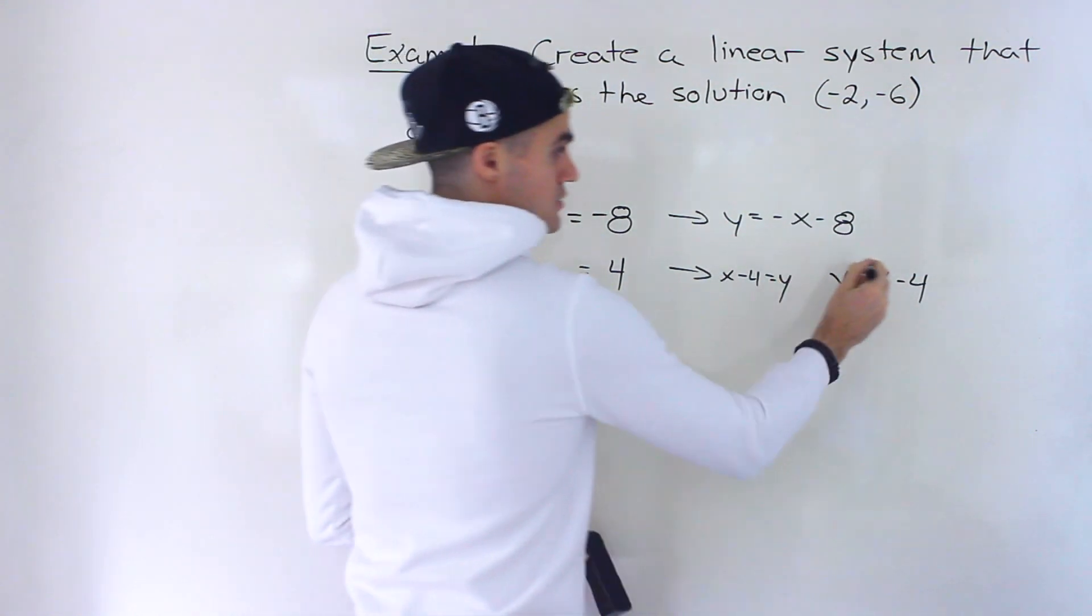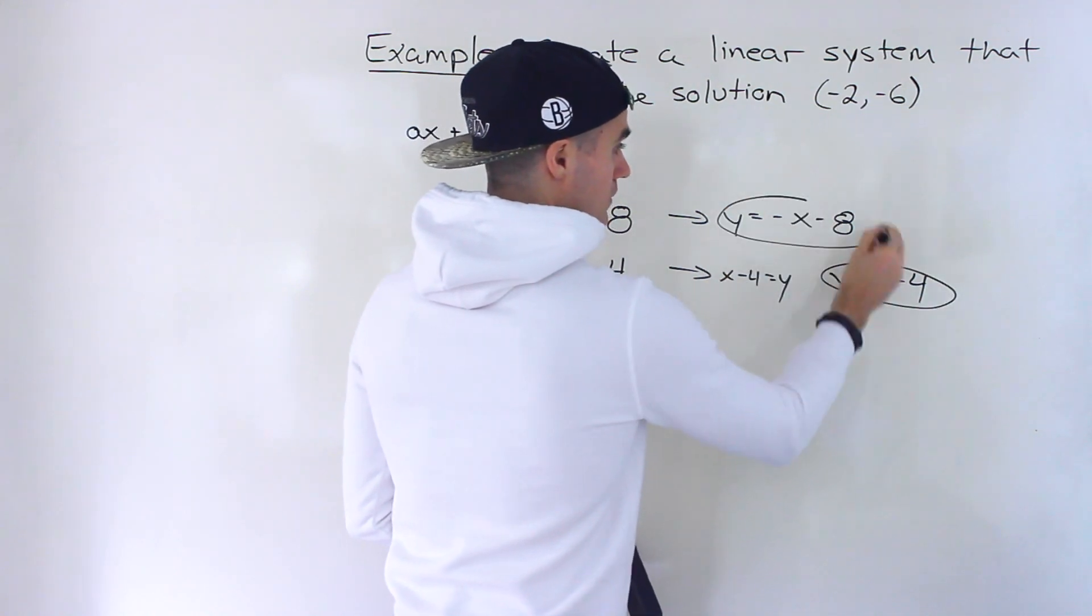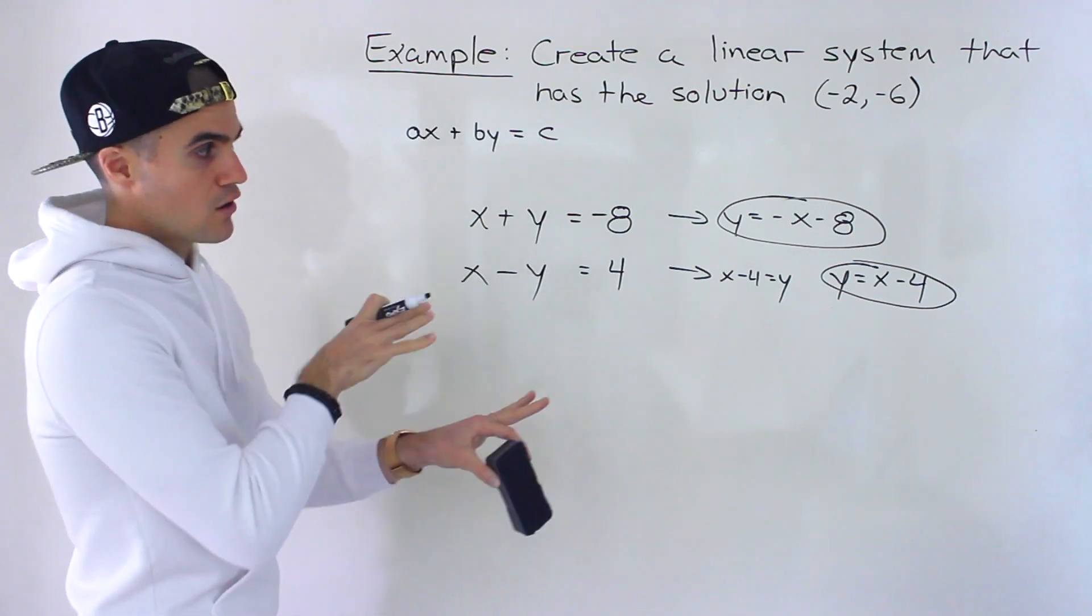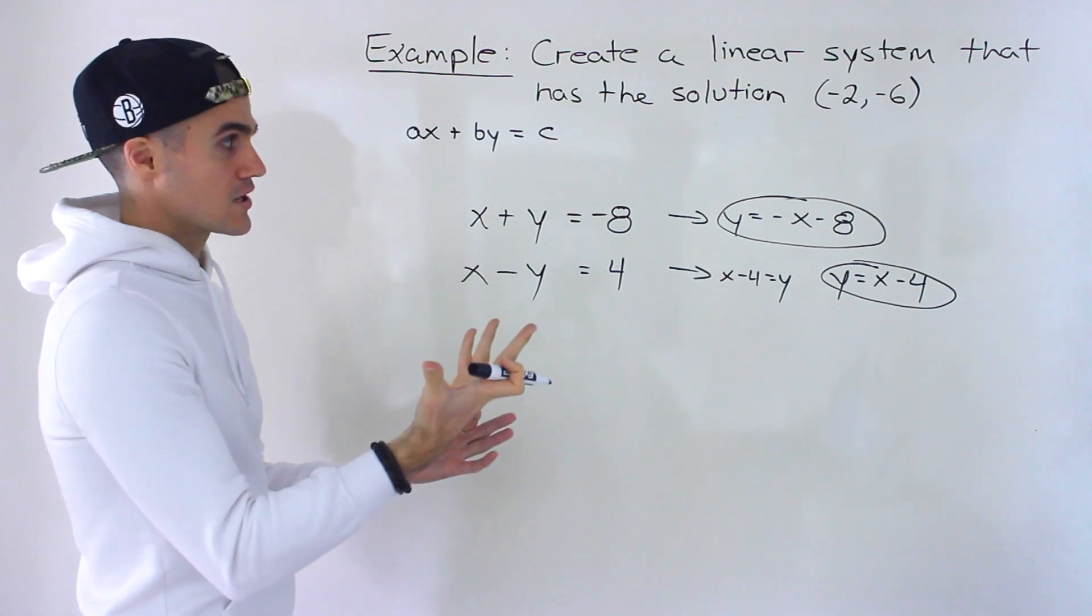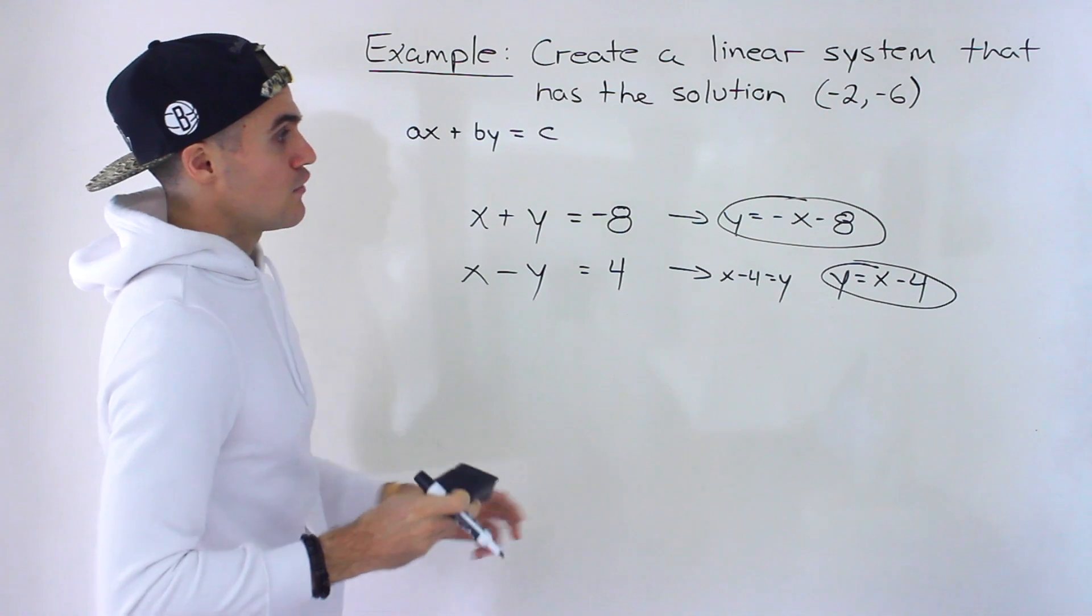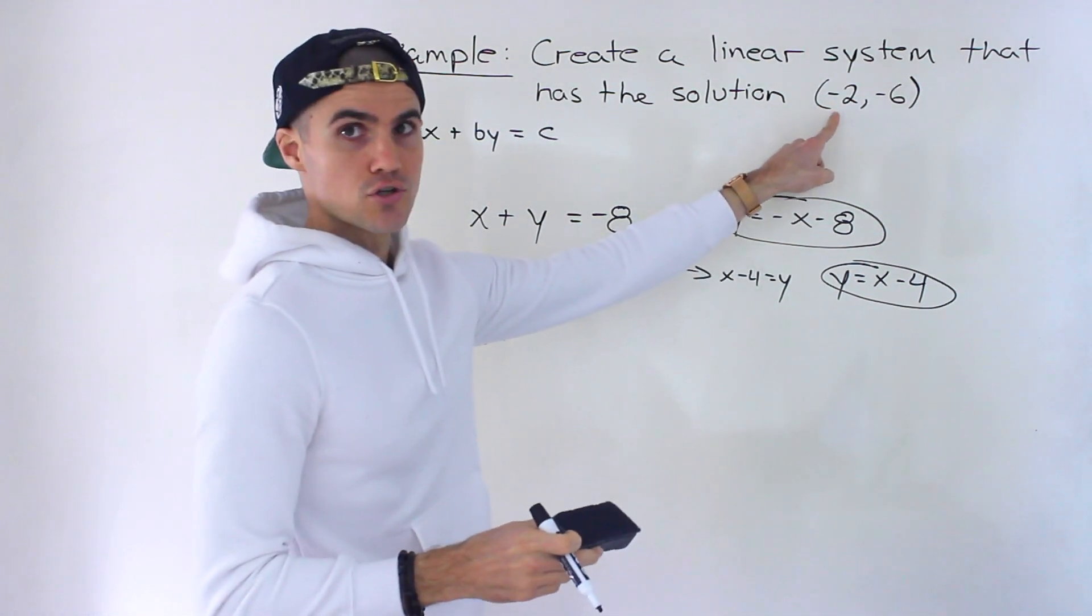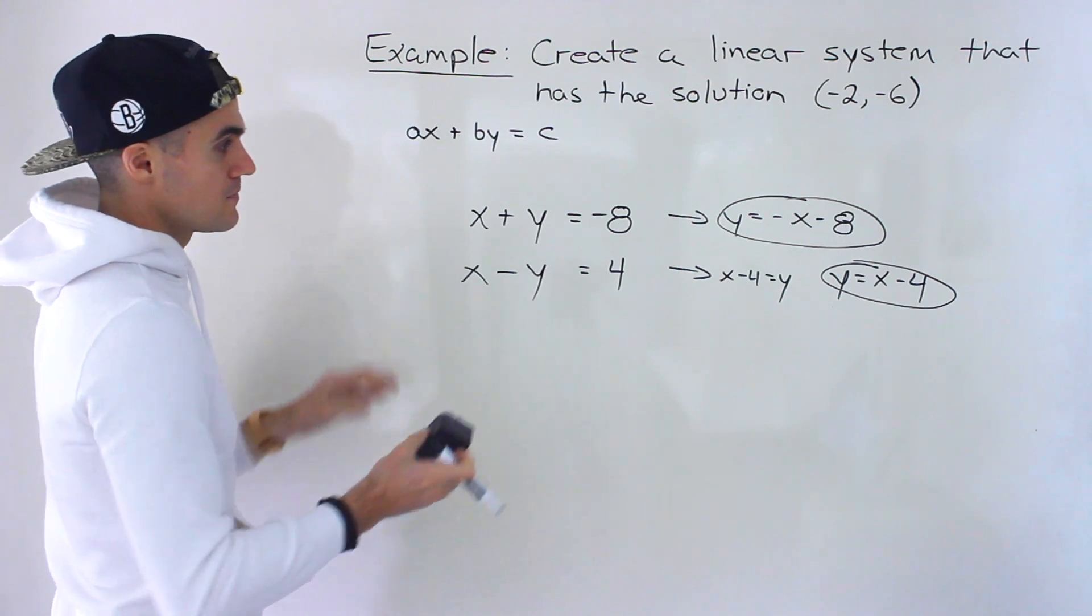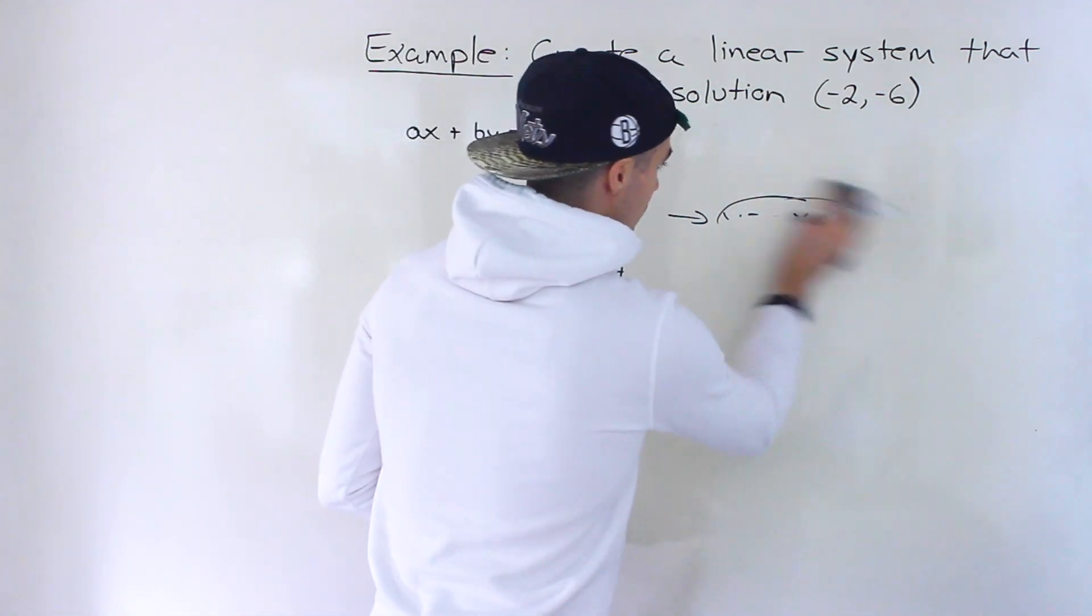So notice that these two lines, they're different. They have different slopes, different b values. But if you were to solve them, if you were to find the point of intersection between them, then this is the solution you would get. So that is one set right there. But again, there's an infinite amount.